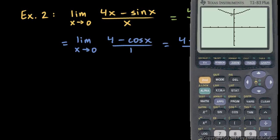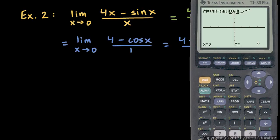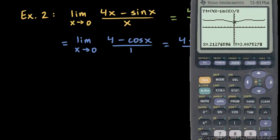The function appears to cross the y-axis at y equals 3. Using trace and moving near x equals 0 — which is what we care about for the limit — the y value is close to 3. At exactly x equals 0, there is no y value; the function is undefined. But at x equals 0.001, we're very close to 3, confirming graphically the same answer we got with L'Hôpital's rule.